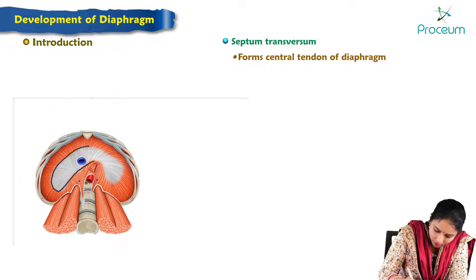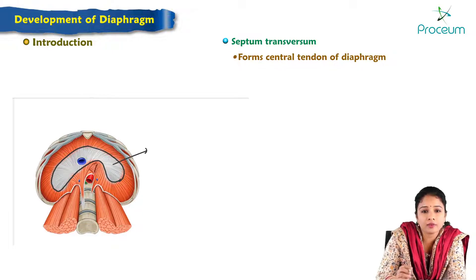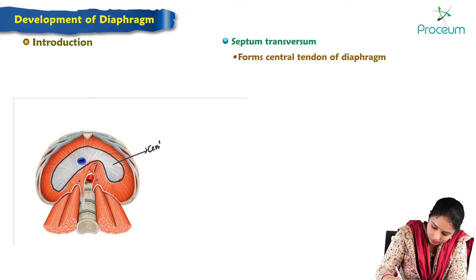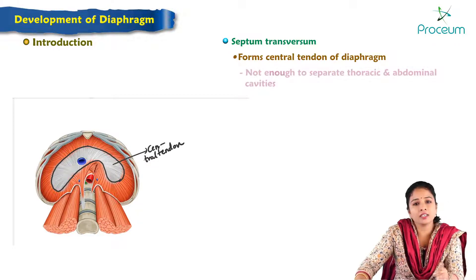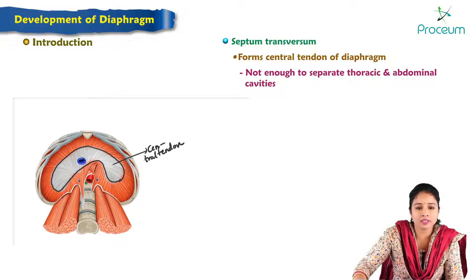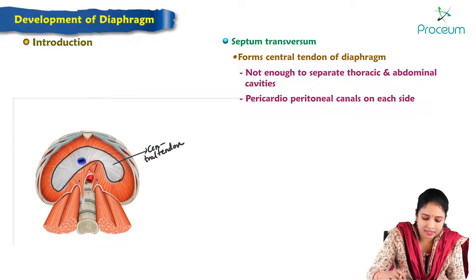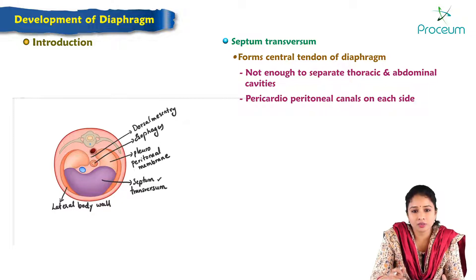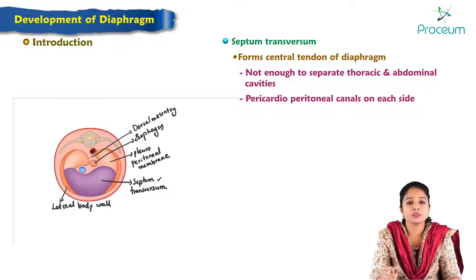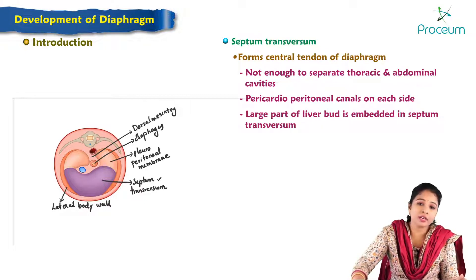Here is the central tendon of the diaphragm, shown in whitish color, which is derived from the septum transversum. However, this central tendon alone is not enough to separate the thoracic and abdominal cavities, as there are pericardio-peritoneal canals on each side of the developing foregut. Additionally, the large part of the liver bud is embedded in the septum transversum, and the connective tissue of the liver is also derived from it.